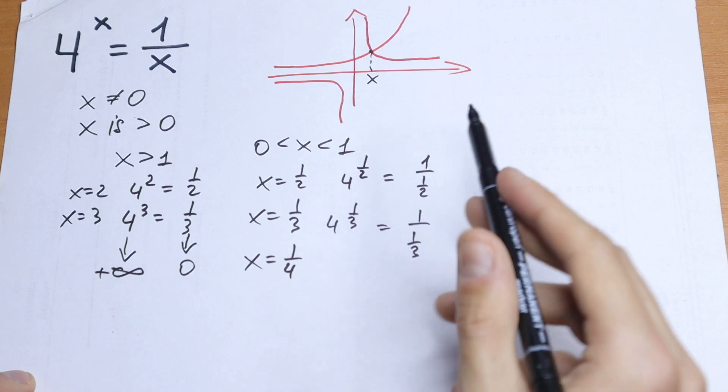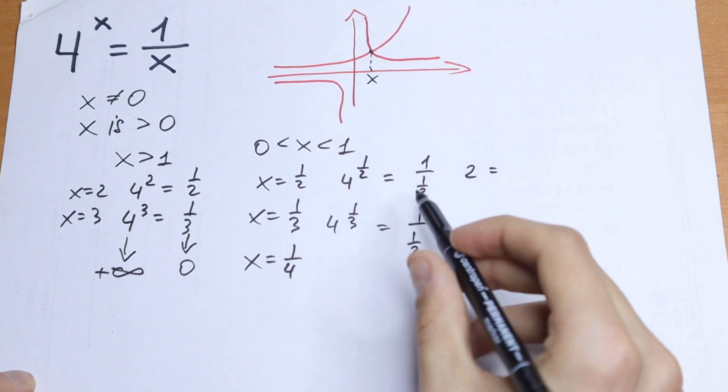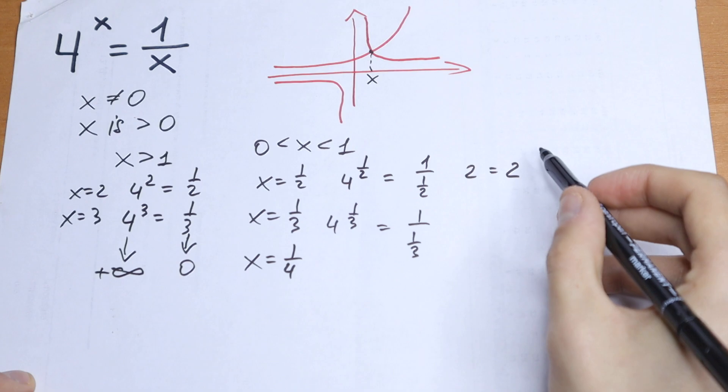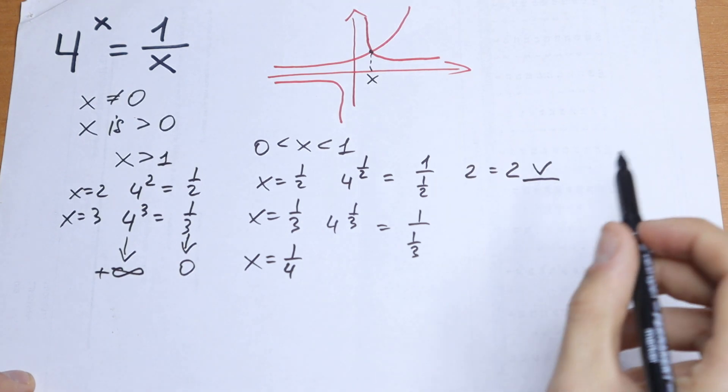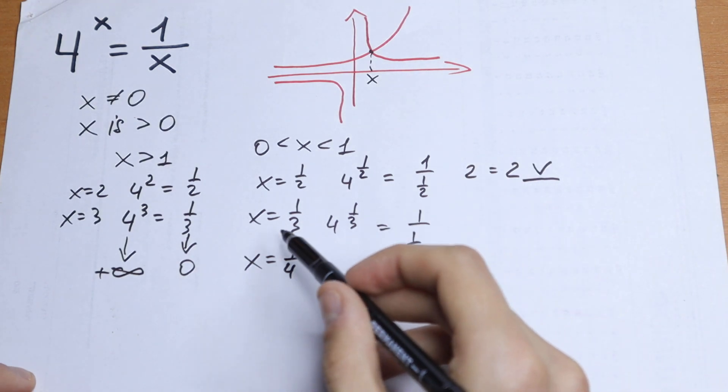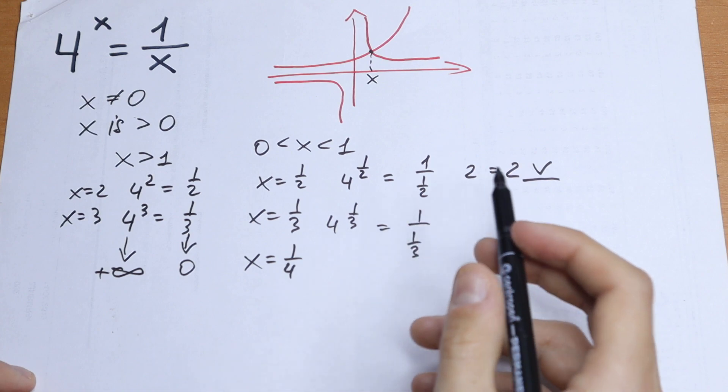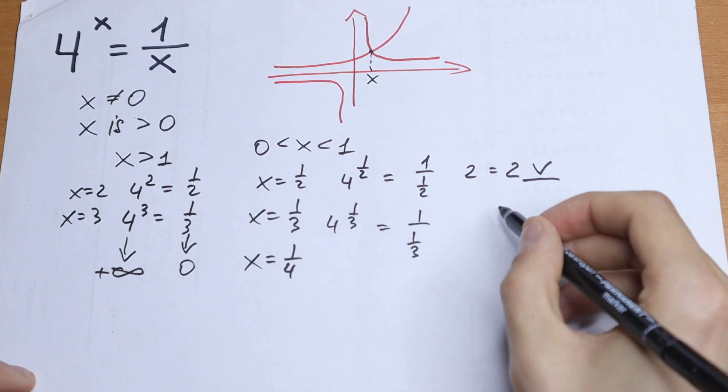1 half. 4 to the 1 half will be 2 equal to 2. So real quick, found our root. So we don't need to check 1 third, 1 fourth. So our root is x equal to 1 half.